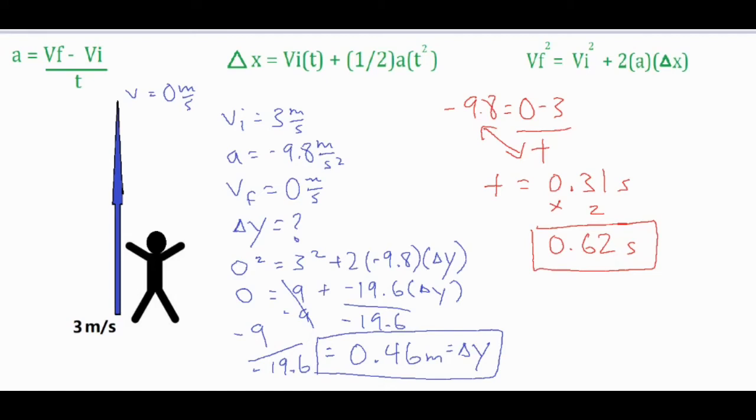Now the other method to solving for our total hang time is we could find the amount of time it takes to reach the top and then double that time. The second way would be to change the VF to negative 3. If something reaches its peak at zero, but goes all the way up and then back down to the same exact position, you can assume that the final velocity is the same as the initial velocity, but with a different sign.